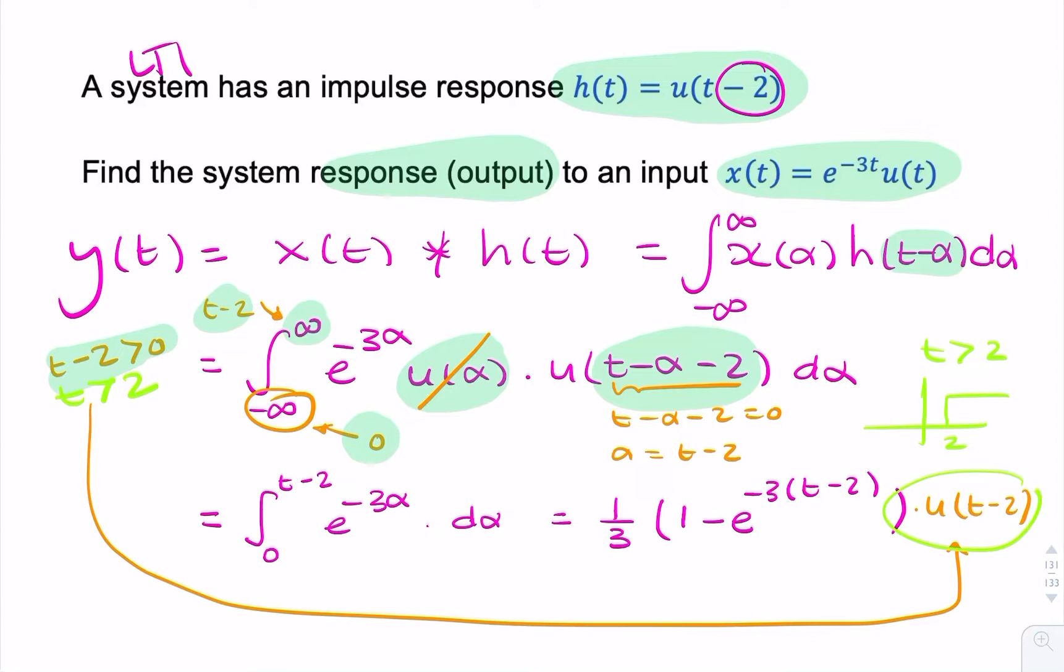So here t is greater than 2. So this is the way we represent that mathematically. So our final answer, find the output. My output is this expression here. And that would be your final answer. Thank you.